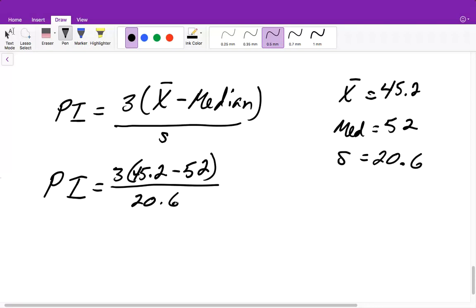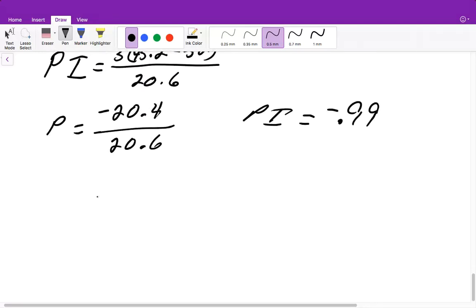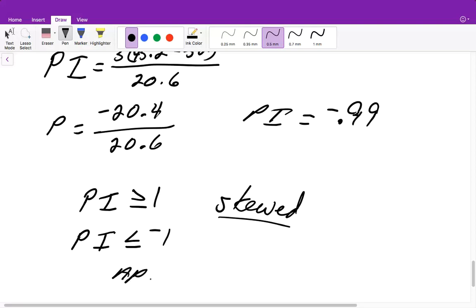So when we plug this into our calculator, 45.2 minus 52 is negative 6.8, times that by 3, so it's negative 20.4. And then we will divide this by 20.6. And that will give us our PI equals negative 0.99. Now, if our PI is greater than or equal to 1, or if our PI is less than or equal to negative 1, then we would say that this is skewed and it's not approximately normal. So although negative 0.99 is close, we would say it is approximately normal.